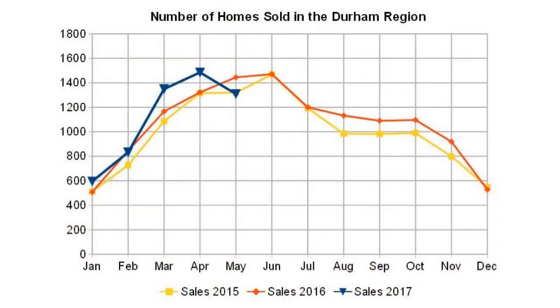What happened in Durham region was very similar. The number of homes sold in Durham region in May were 1,309 homes versus 1,485 in April. In contrast, the number of homes that came on the market in Durham region were 82.7% more than in April.